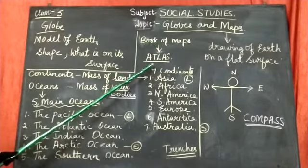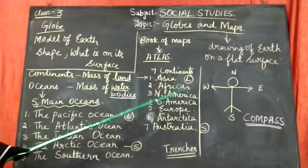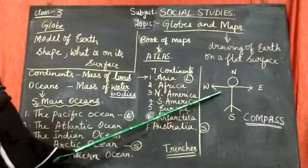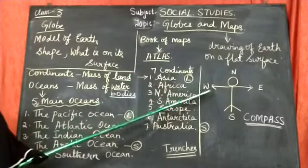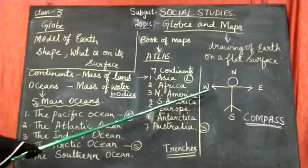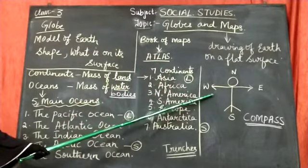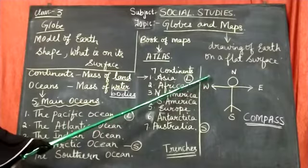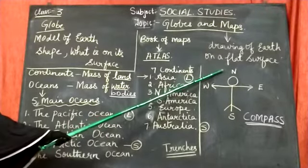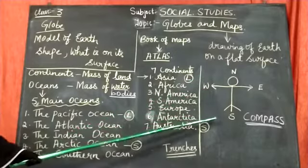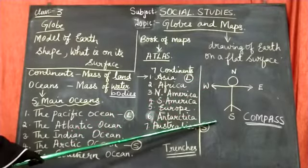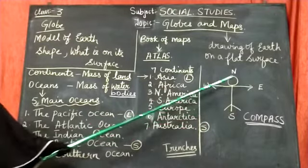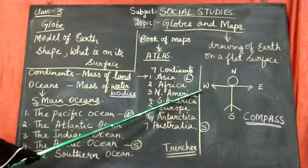Now let us come to know about the directions. If you stand in front of the map, if you are facing towards the map, the front part, the upper part is the north and the down part is the south. Towards your right is the east and towards your left is the west.